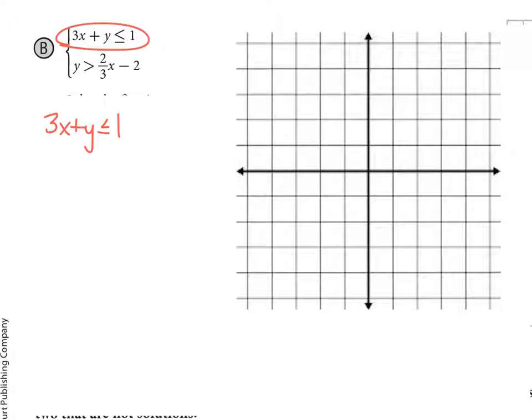So instead of doing that, I'm going to solve this equation for y. So I'm going to subtract 3x so that I can move it to the other side. So now my equation is going to say y is less than or equal to negative 3x plus 1.